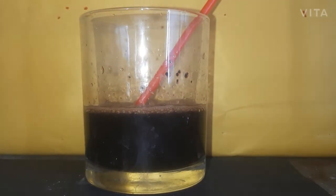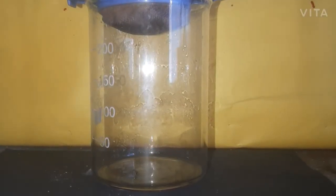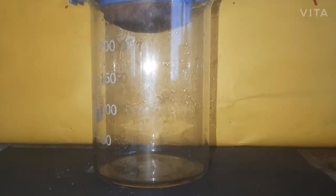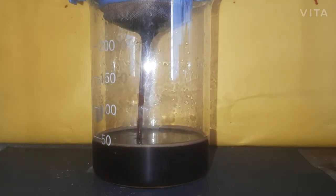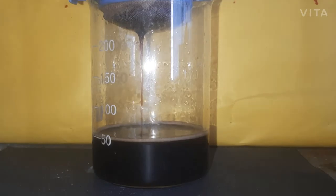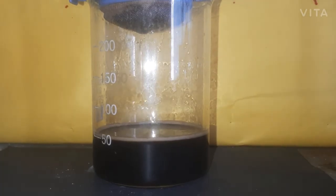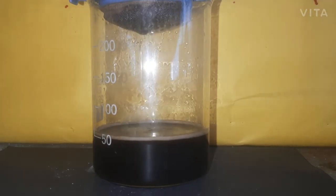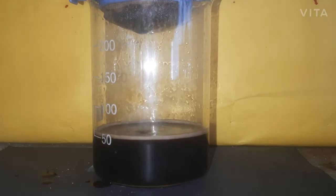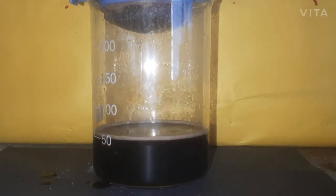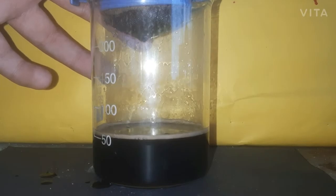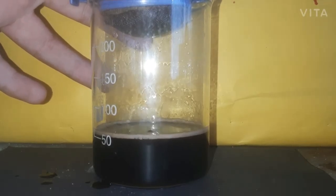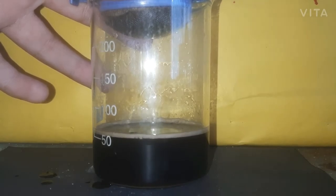Now we let it sit for a couple of minutes. We'll do a simple filtration with a tea strainer. I'll take a spoon and press on the tea leaves to extract all the caffeine and sodium carbonate solution.